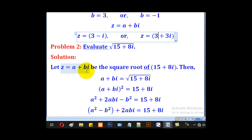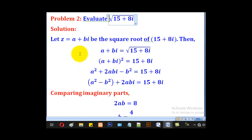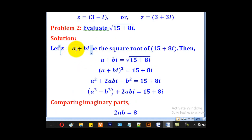Then problem 2: they want us to evaluate the square root of 15 plus 8i. So in this case, we shall first let Z to be equal to A plus Bi, and that will be the square root of 15 plus 8i. That implies that A plus Bi is equal to the square root of 15 plus 8i.